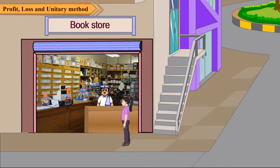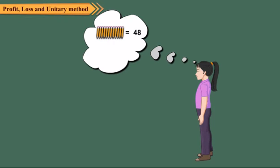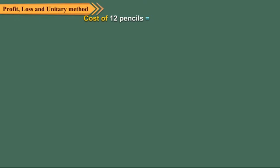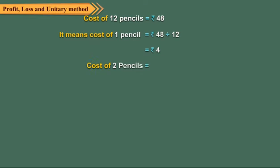One day, Rajeev went to a bookseller to buy 2 pencils. The shopkeeper told her the cost of 1 dozen or 12 pencils is Rs. 48. But Rajeev wanted to know the cost of only 2 pencils. In our daily life, we come across such situations quite often. To deal with such situations, we first find the cost of 1 item. Cost of 12 pencils is Rs. 48, so cost of 1 pencil is Rs. 48 divided by 12, that is Rs. 4. So, cost of 2 pencils is Rs. 4 into 2, which equals Rs. 8.